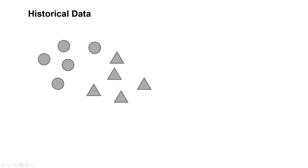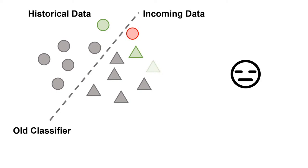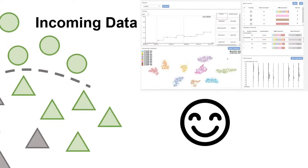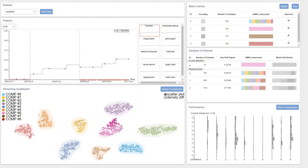A classifier trained on historical data may fail to classify incoming data when the data distribution is changing — a phenomenon called concept drift. To handle concept drift, we developed Drift Viz, a visual analytic system to help experts understand when, where, and why the drift happens, and update the model to improve performance.